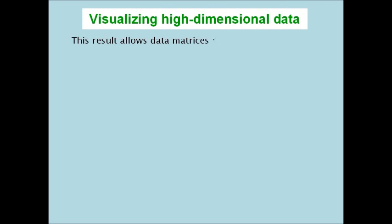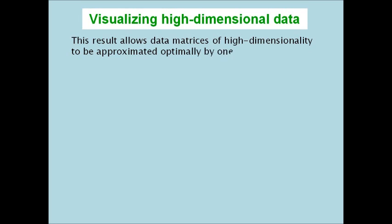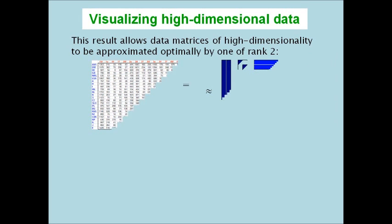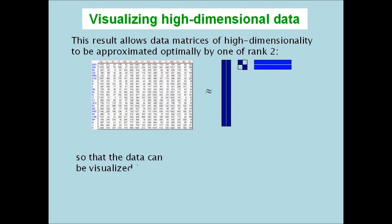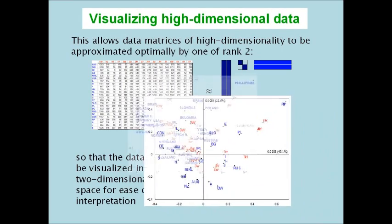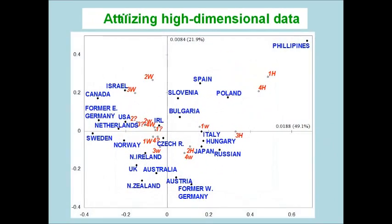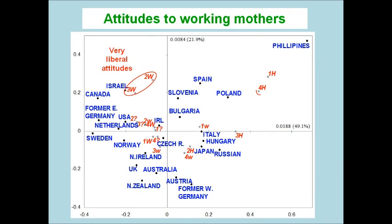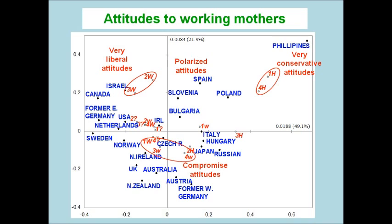This result allows data matrices of high dimensionality to be approximated optimally by one of rank 2, so that the data can be visualized in a two-dimensional space for ease of interpretation, as shown by this map of countries in terms of their attitudes about whether mothers should work outside the home or not.